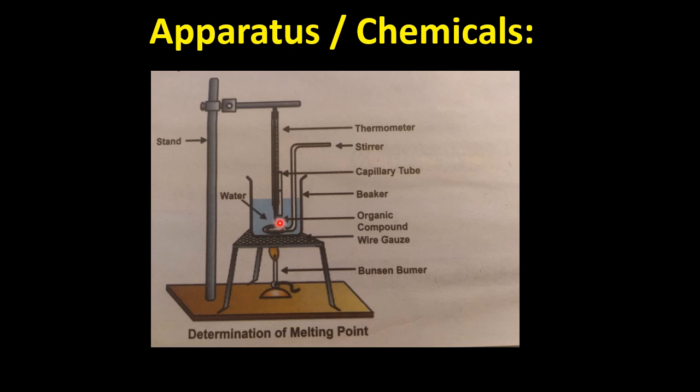Now what you have to do? You have to insert this apparatus in a beaker having water in it. The capillary tube is basically like a straw with two open sides. When you have to take a compound in it, we have to close one end by heating it. Then we take the compound in it.